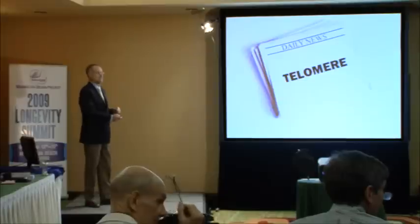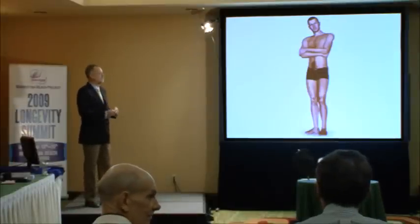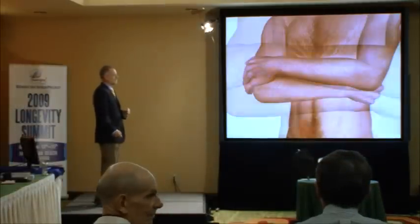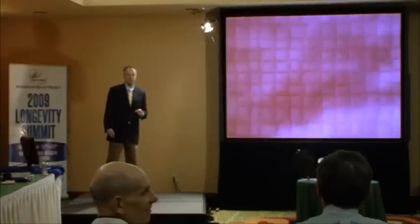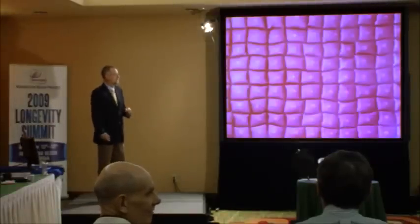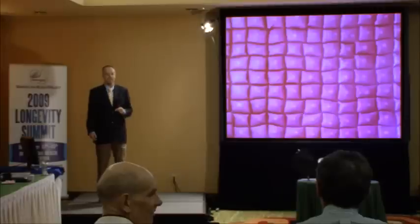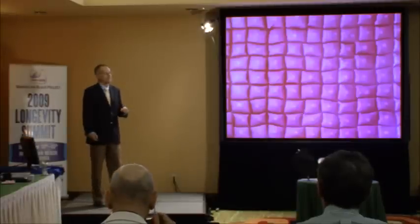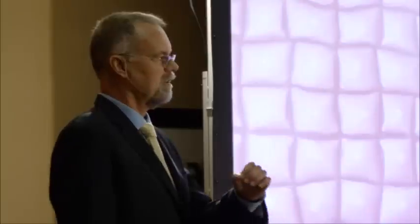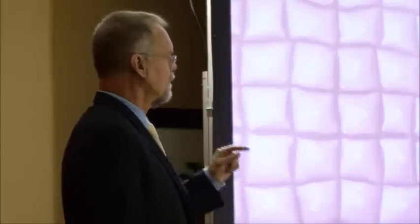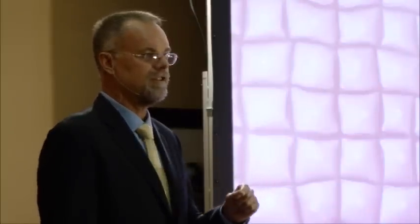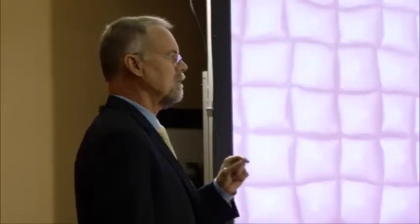In order to explain what a telomere is, I'd like to first zoom in on a human being. We see that a human is made up of a hundred trillion cells. There are a lot of theories about why we age, and a lot of them say that we age because our cells age. And so, if we can find a way to control the aging process in our cells, this should be a way of controlling aging in us.